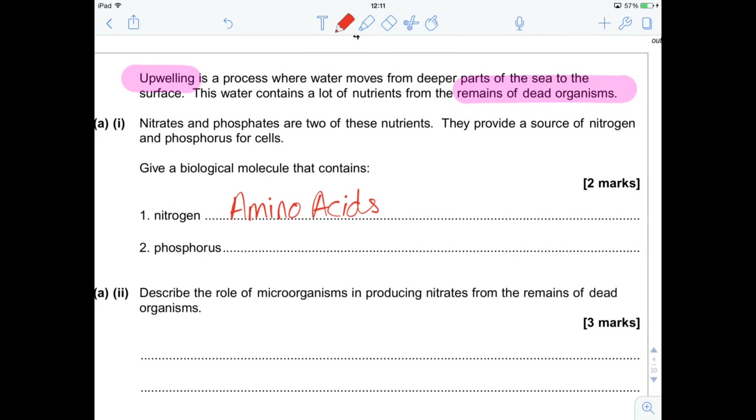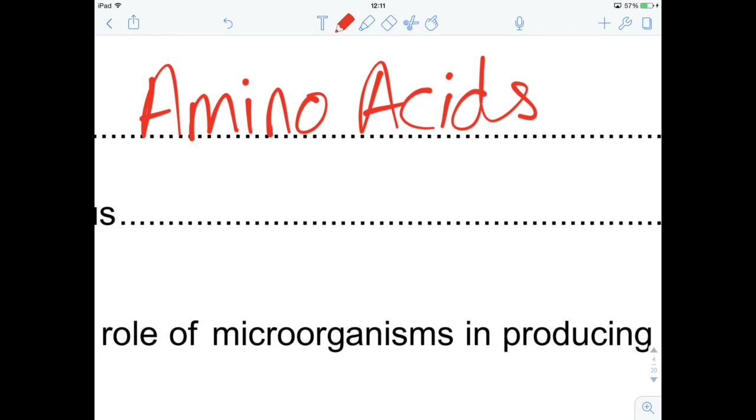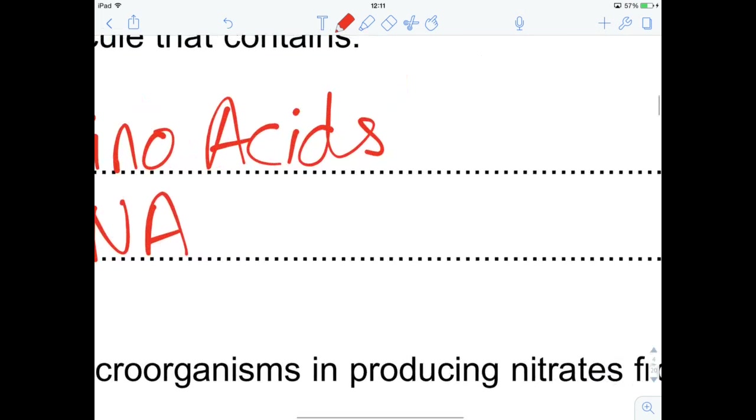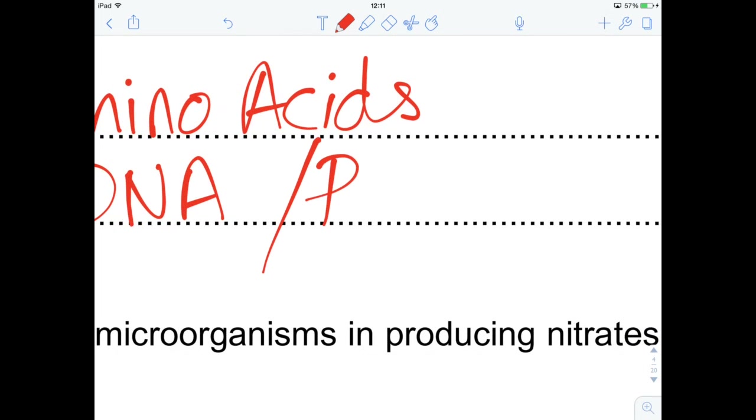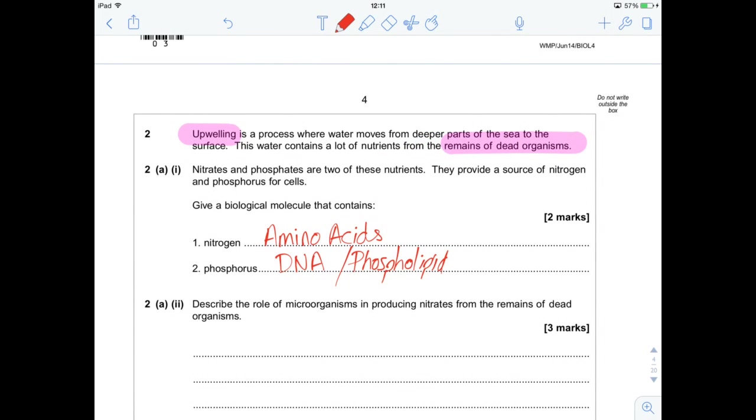Phosphorus, the one that springs to mind here instantly is nucleic acids, like DNA. But you could also say something like phospholipids, which are absolutely essential in making the phospholipid bilayer that will make up the cell membrane. If you need some revision on that, again, check out my video just above, right here.